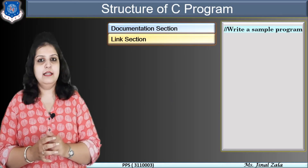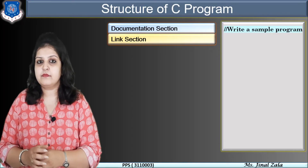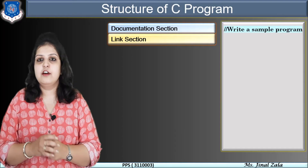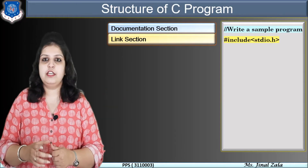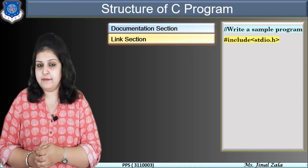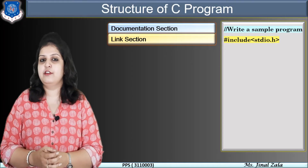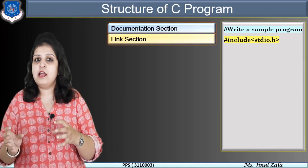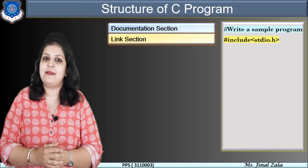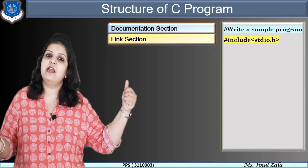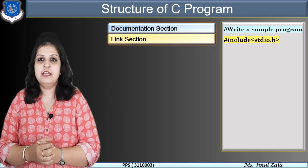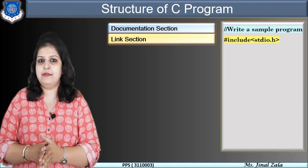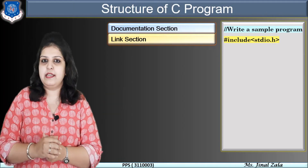The second section is the link section. It is used to link our program to the system libraries and it is a mandatory section. For example: #include <stdio.h>. Here stdio is one library — the full form of stdio is Standard Input Output. If you want to use any type of input and output function, those functions are available in this library. To use them, we must include this library. The .h extension means it is also called a header file. We have many different libraries available, but here only one is shown as an example.